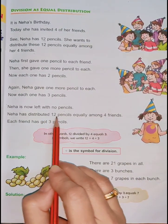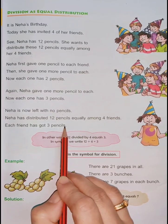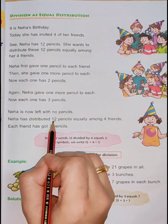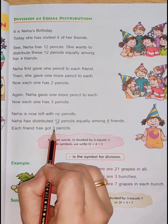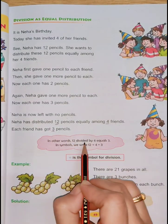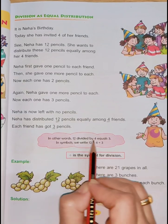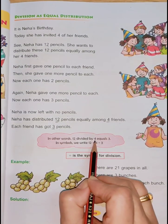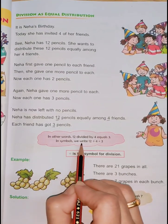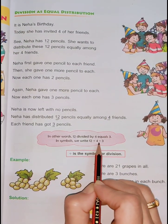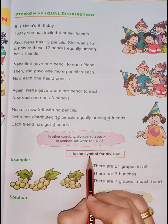Neha has distributed 12 pencils equally among four friends, and each friend has got three pencils. So children, 12 pencils are distributed equally among four friends and each friend has got three pencils. In other words, 12 divided by 4 equals 3. Here, 12 is the total number of pencils, 4 is the number of friends, and 3 is the number of pencils each child got. In symbol, we write 12 ÷ 4 = 3. Can you see this is the symbol for division?